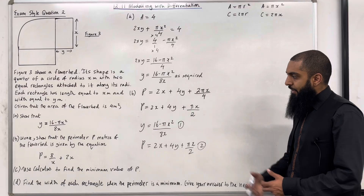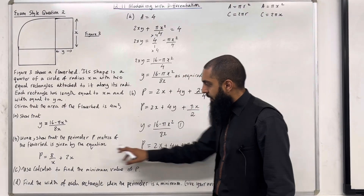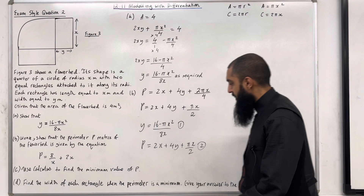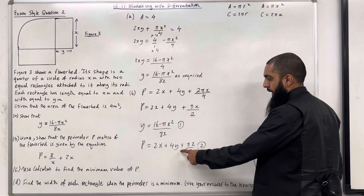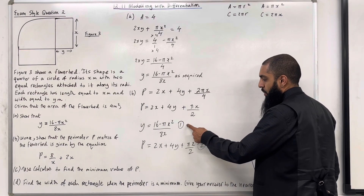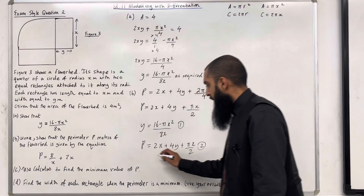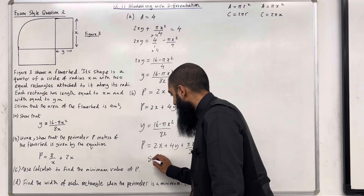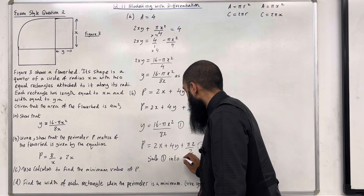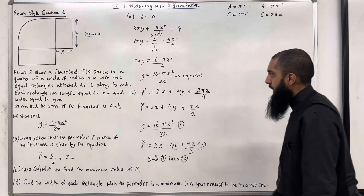As we can see, there is no y in the final perimeter formula, so we need to eliminate y. To do this, we substitute equation 1 into equation 2.